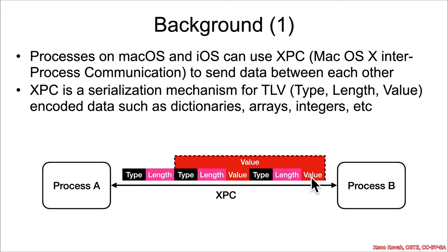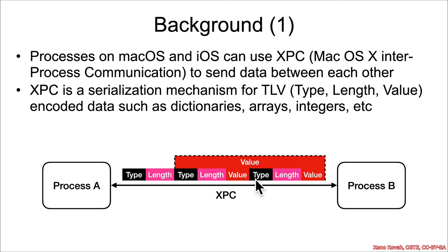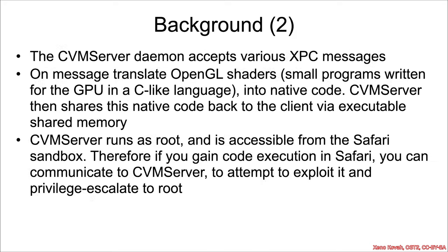You can have types in code like an array of other types. This type would be an array, the length would be the total length, and then the array would contain things — those things could be integers, those things could be subarrays, and so forth. It's just a serialization and encoding scheme to send information between processes.